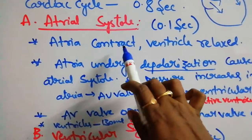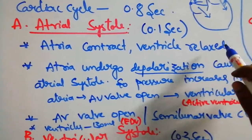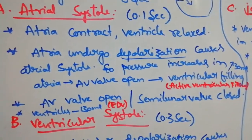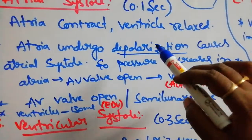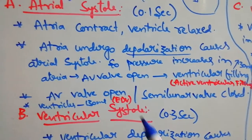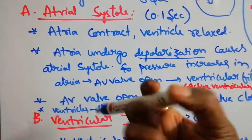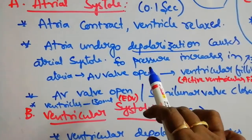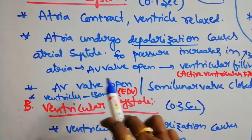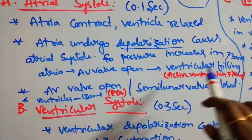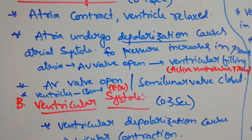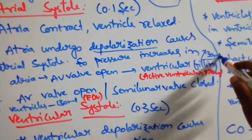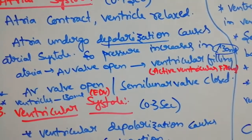During atrial systole, the atria undergo contraction while the ventricle is relaxing. Depolarization in the atria causes systole, meaning contraction. When contracted, pressure increases, causing the AV valves to open and ventricular filling to take place. This is called active ventricular filling, with 30 ml of blood transferred.